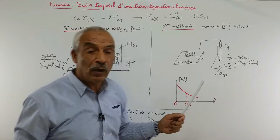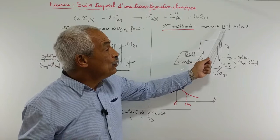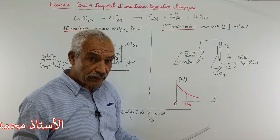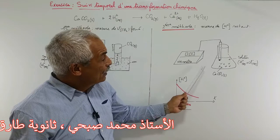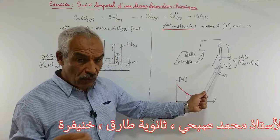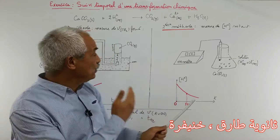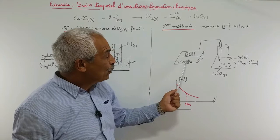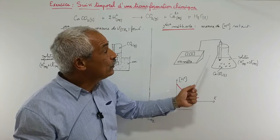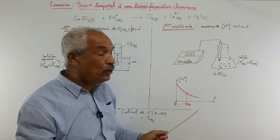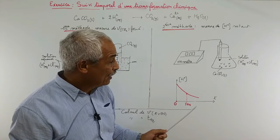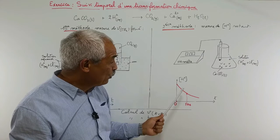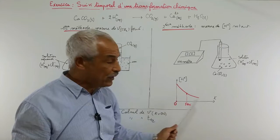Deuxième méthode : la deuxième méthode d'étude du suivi temporel consiste à mesurer la concentration des ions H+ restant en solution aqueuse. Nous allons utiliser pour cela un pH-mètre, dont l'électrode est trempée dans le mélange réactionnel — le même mélange que pour l'étude par volume de CO2. Nous allons mesurer à des instants différents la valeur du pH, parce que le pH est lié directement à la concentration des ions H+.